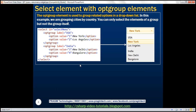Now let's look at an example using a select element with optgroup elements. The optgroup element is used to group related options in a drop-down list. In this example, the first group is country USA containing cities belonging to USA, and the second optgroup contains cities belonging to India. These option group elements are especially useful when you have a large number of options.